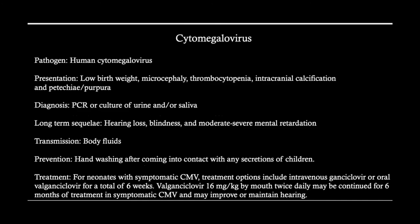Cytomegalovirus — the C of TORCH — is a virus that presents with low birth weight, thrombocytopenia, intracranial calcification (also present in toxoplasmosis), petechiae, and purpura. Long-term concerns include hearing loss, blindness, and neurodevelopmental delays. This is transmitted via bodily fluids, so hand washing is especially important after contact with children's secretions, as children may be carriers and spread it quickly in places like preschools. If the child is symptomatic, treatment includes intravenous ganciclovir or oral valganciclovir for six weeks, potentially continued for six months, which may improve or maintain hearing.